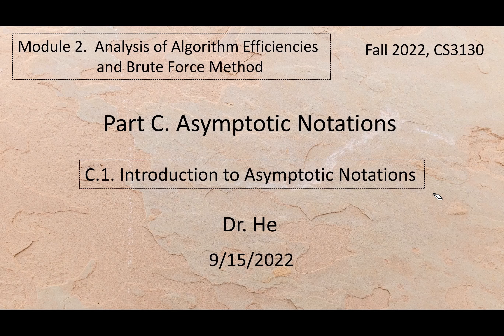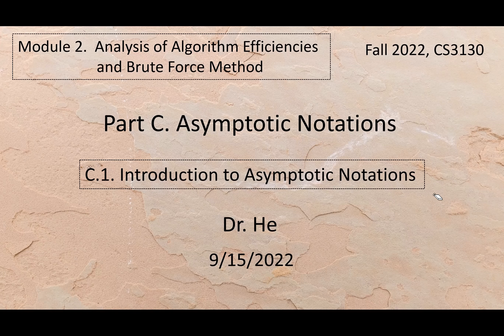Part C of module two, the topic is asymptotic notations. This is the main topic of this module. We did preparation in part A and part B, so we slowly prepared for this main part. Asymptotic notations — pretty abstract. C point one: introduction to asymptotic notations.